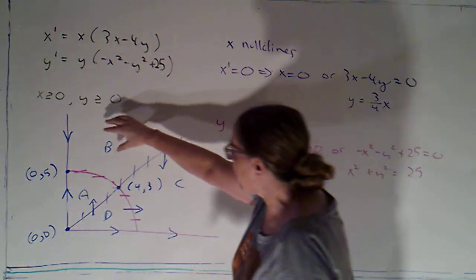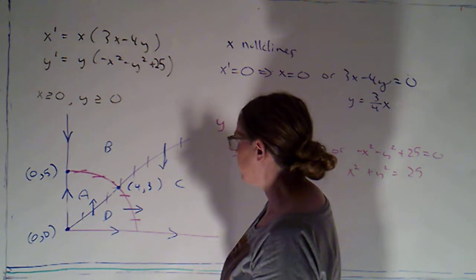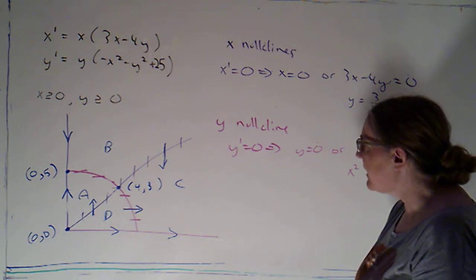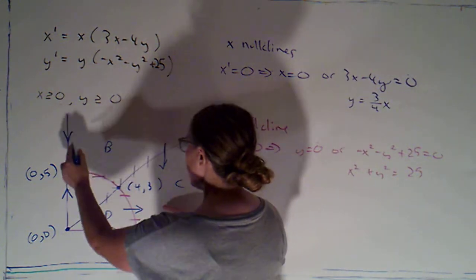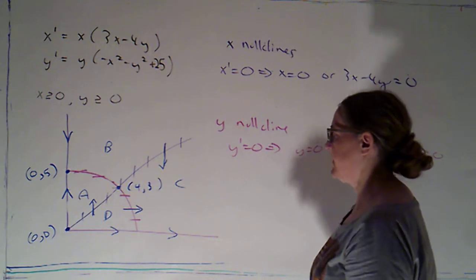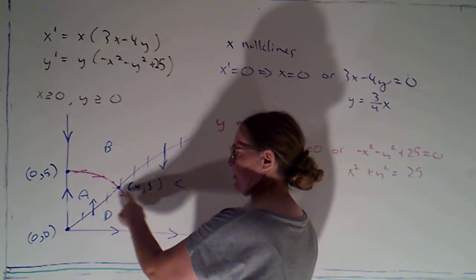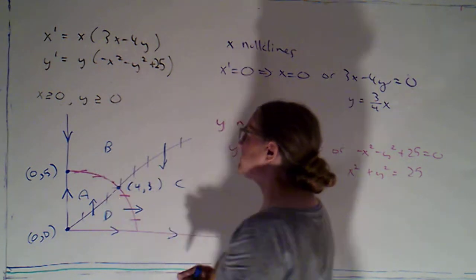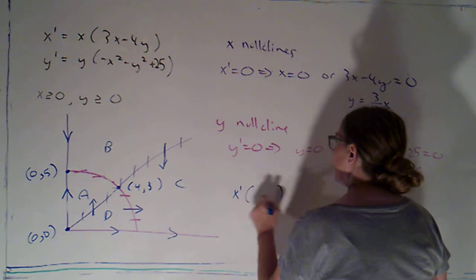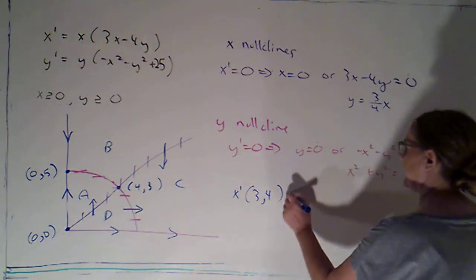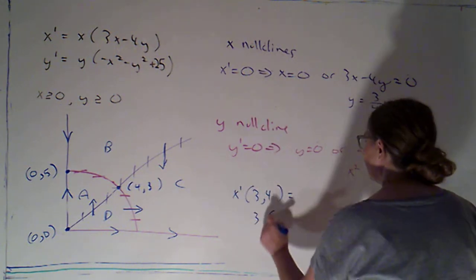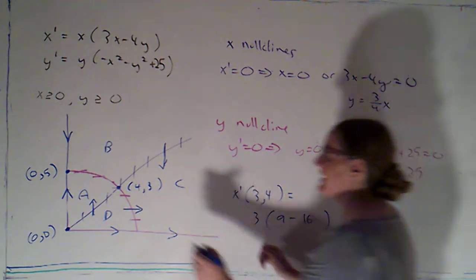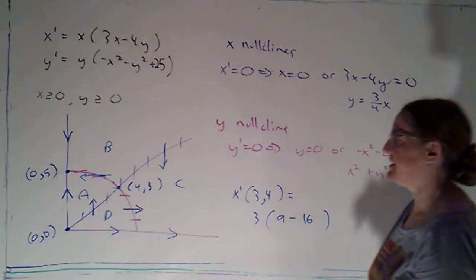Okay. All right. So let's see. Now I want to know what's happening over here. I want to know whether these are going left or right. And it actually looks like we're going to have to plug in a point. Oh my goodness. Who'd have thunk? But yeah, I don't have any other information about either b or a in the horizontal direction of things. Okay. So, let's just observe. This point 4, 3 is right here. The point 3, 4 would also be on this circle. So, I'm going to just plug in 3, 4 to x prime and see what I get. Okay. So, that's going to be 3, which is positive. Okay. Times 3x would be 9, minus 4y would be 16. That would be a negative number. Positive times negative is negative. So, we're going to be going to the left here.